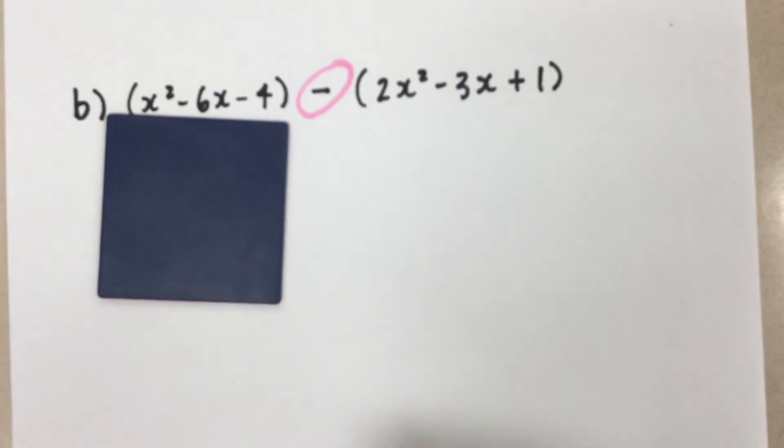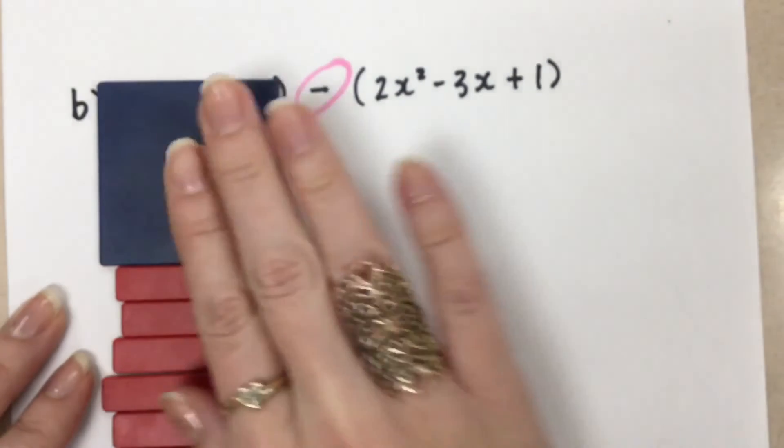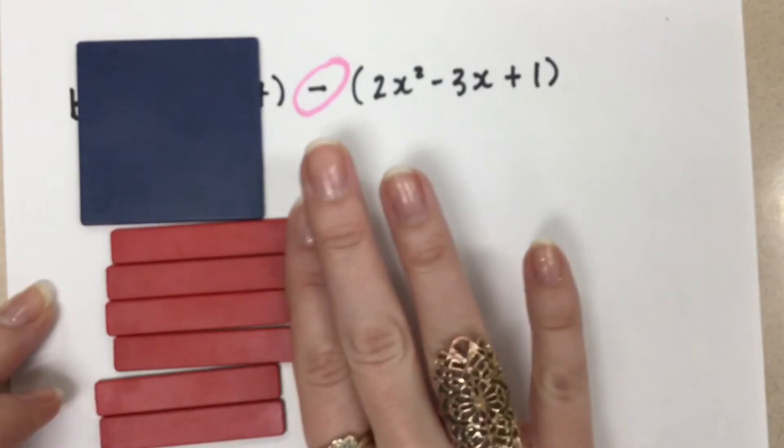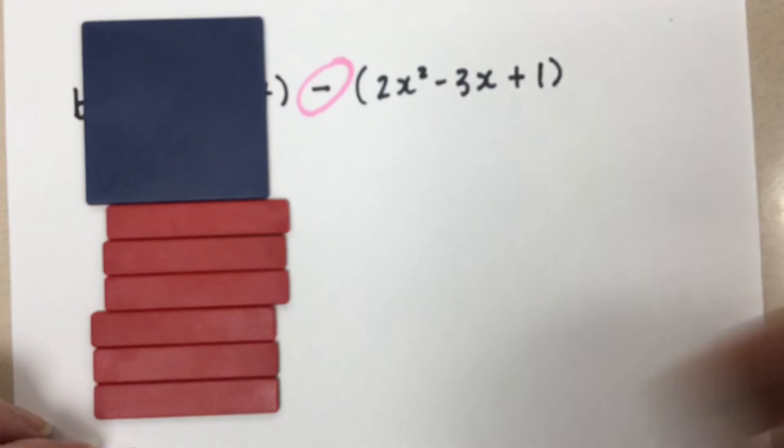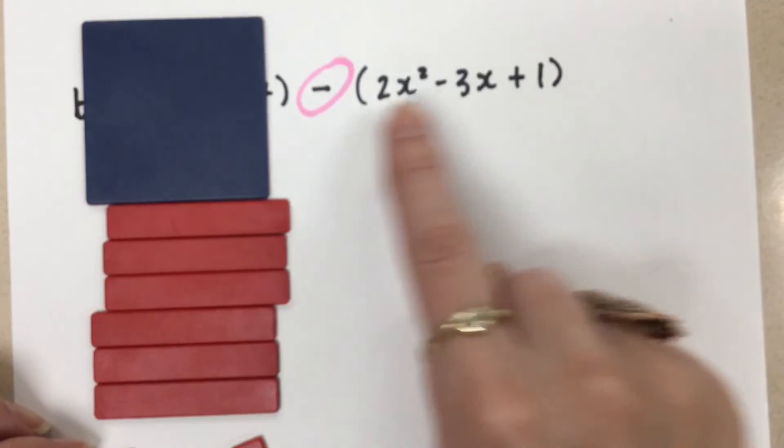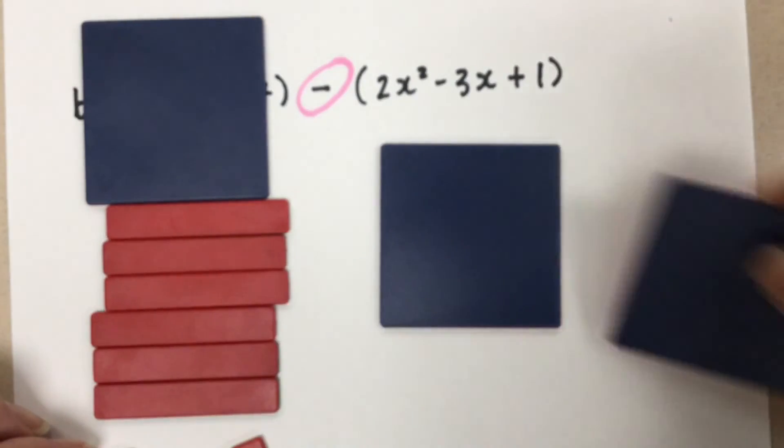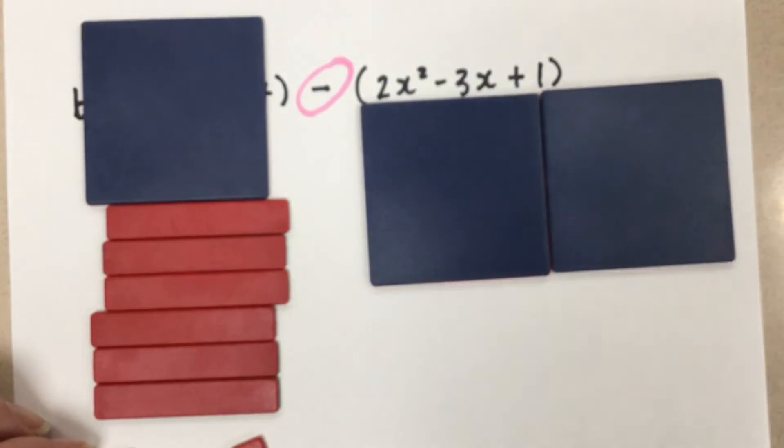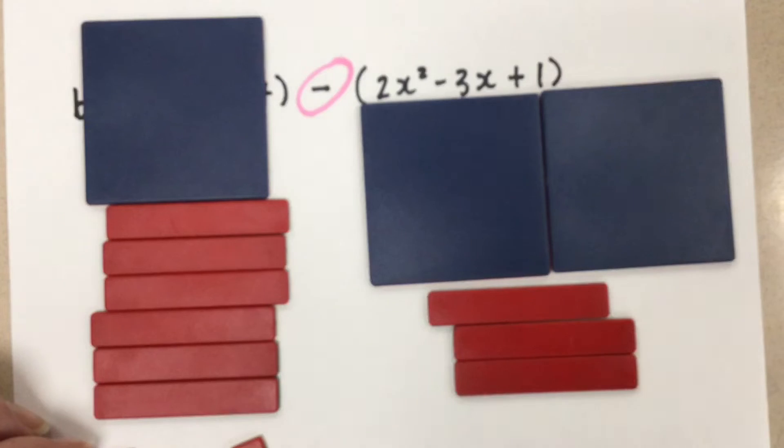So we're going to start by just getting all the tiles that we need there for that first expression. So that is 1x squared minus 6x, and minus 4. Okay, now we're going to get this polynomial. Let's ignore that minus in between for now. Let's get this polynomial. So that's 2x squared minus 3x and then plus 1.